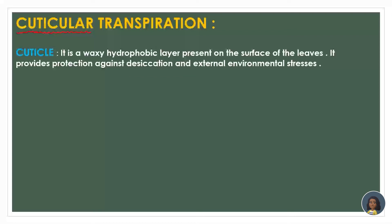Let us begin with cuticular transpiration, which basically involves cuticles. Cuticles in plants have a different meaning than cuticles in animals. In animals, a cuticle is a proteinaceous covering we find in our nails. But in plants, cuticle has a separate meaning. It is basically a waxy hydrophobic layer present on the surface of the leaves. It provides protection against desiccation and external environmental stresses.